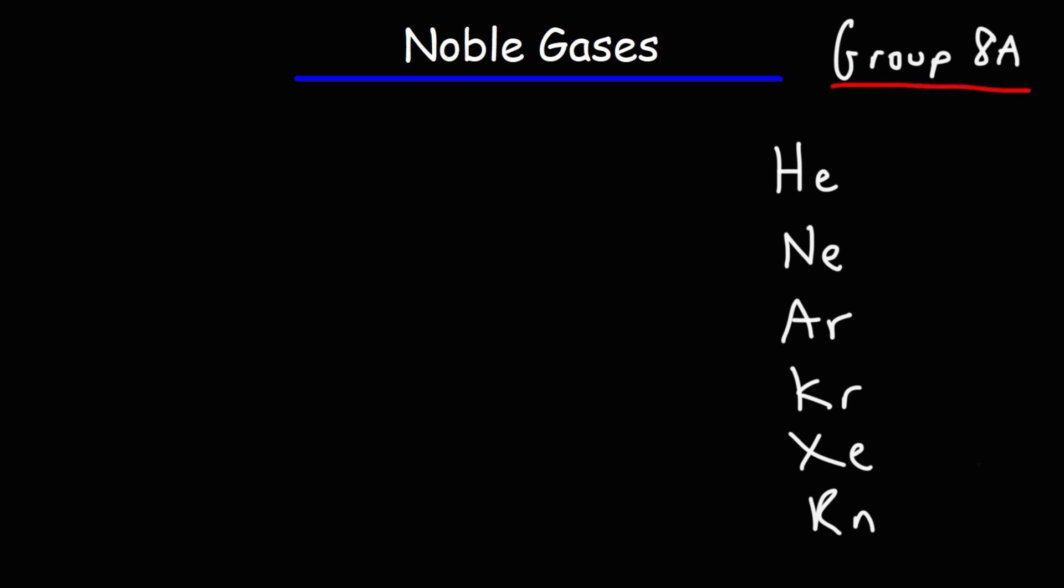Now these gases are fairly non-reactive. They're chemically inert for the most part. Some of them however can participate in reactions like krypton and xenon. They can form stable compounds with very reactive elements like fluorine and we'll talk more about that later, but for the most part they're chemically inert. They don't really want to react. They're fairly stable and this is because their outer energy levels are filled with electrons.